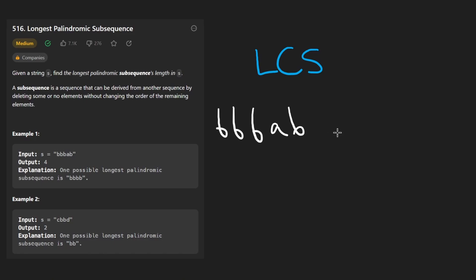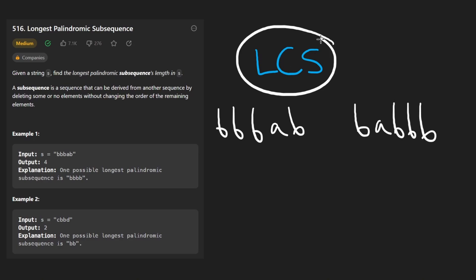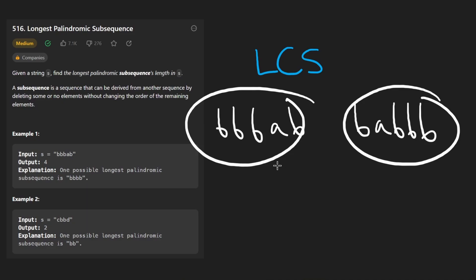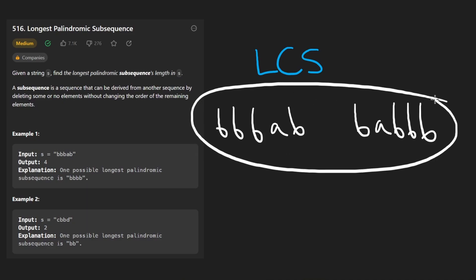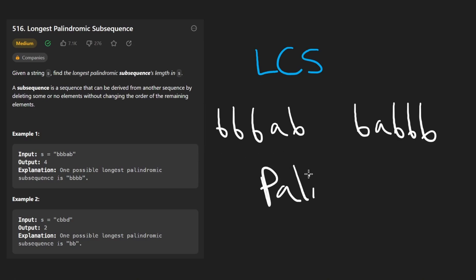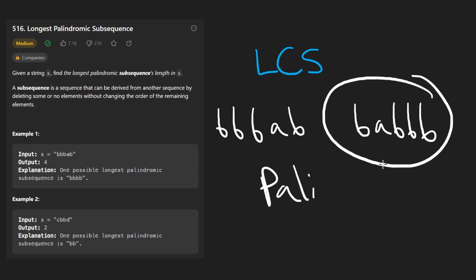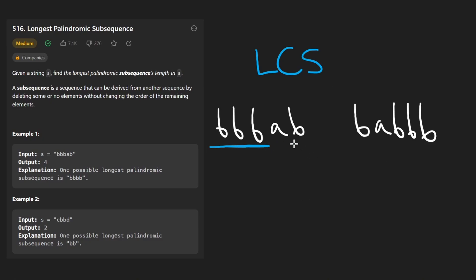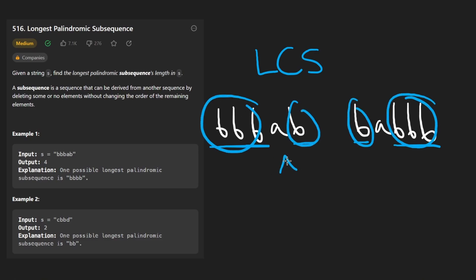Basically, we would take the input string as one parameter, and also take the reverse of this string — which would be b, a, b, b, b — and then run LCS on these two strings. Not only would it find the length of the longest common subsequence, but it guarantees that the subsequence also happens to be a palindrome because we reversed the input string. In this example, four consecutive b's is the longest common subsequence between these two strings.